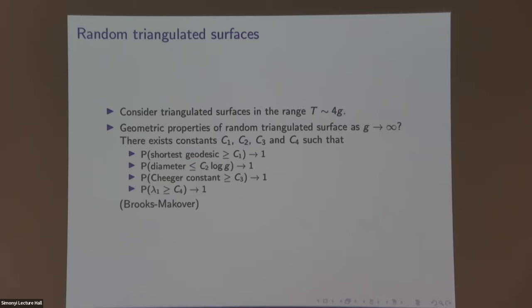The proof is mostly combinatorial. Triangulations are dual to trivalent graphs, so you can translate all of these into statements involving trivalent graphs and do the relevant combinatorics. This is referring to the hyperbolic metric. In this situation the hyperbolic metric can be seen very easily from the flat metric, because there are very few vertices with very high degree, so you can just write down what the hyperbolic metric is approximately — which also makes it easier to study these problems.